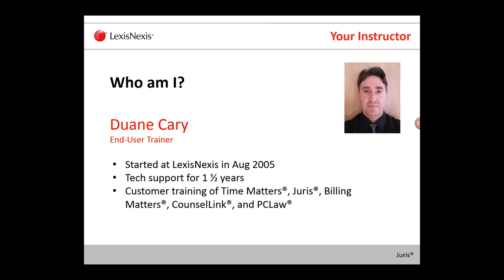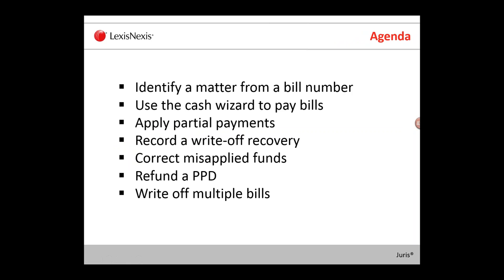Today we're going to look at the basics of entering a cash receipt and a credit memo, but we'll also cover how to identify a matter from a bill number, use the cash wizard to pay bills, apply partial payments to a bill, record a write-off recovery, correct misapplied funds, refund prepaid funds when a matter is closed, and write off multiple bills for a client or matter at once.